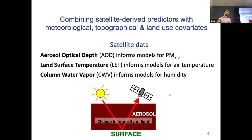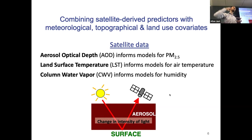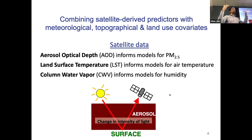We're using several different kinds of satellite data and combining that with what might be termed land use regression predictors. From the satellite data, one parameter that we use a lot is a product called aerosol optical depth, which is the amount of light scattering related to particles in the entirety of the atmospheric column. One of the limitations is that humans are mostly doing our breathing in the bottom two meters of the atmospheric column.